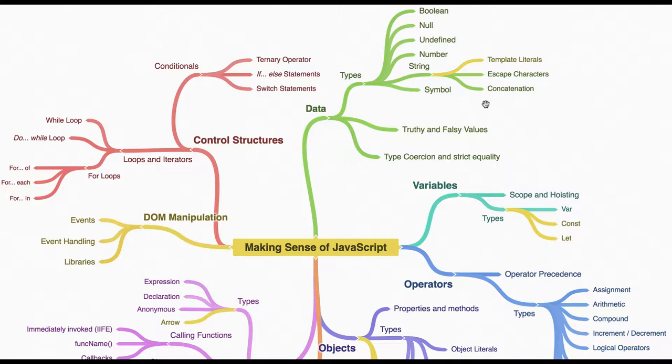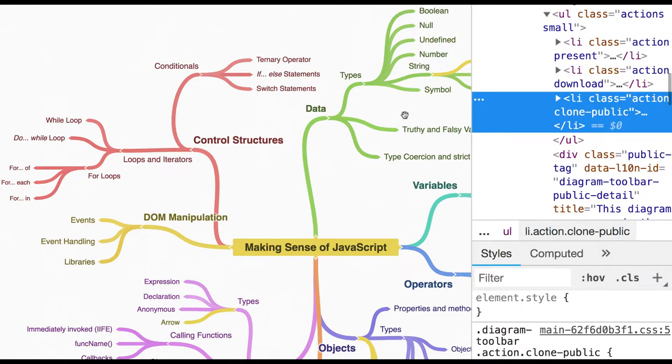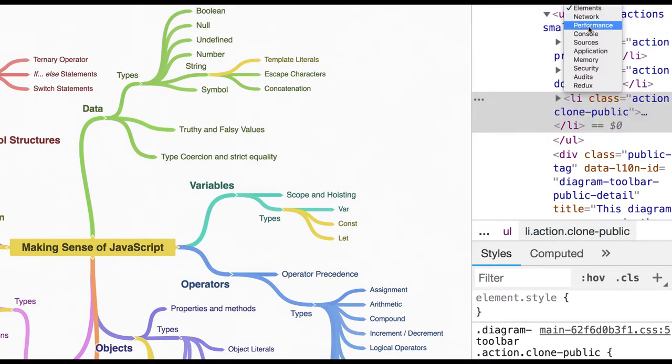Earlier in ES5, whenever we needed to concatenate two strings, we needed to put a plus sign between both strings. But that is not needed now. We can put backticks for those two strings. I will talk about these examples so everything will be clear for you guys.